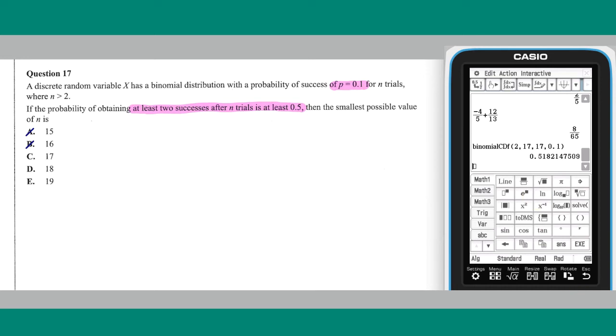As this probability exceeds 0.5, and the values less than 17 have been checked, n equals 17 is the smallest possible value of n, and so the answer is C.